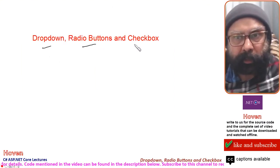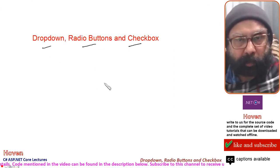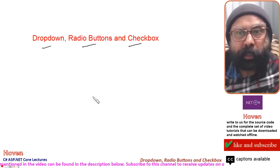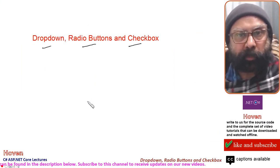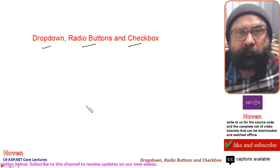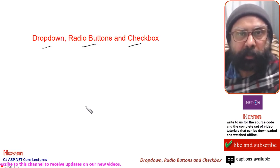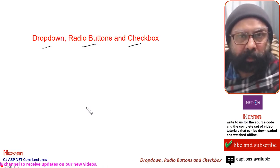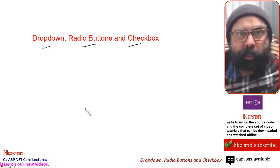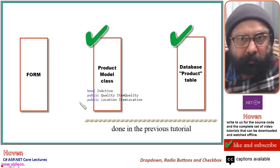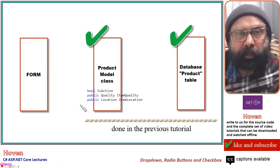We are learning how to extend an existing form by adding drop-down, radio buttons, and checkboxes. Some work has already been done in the last lecture and this is the second part of that lecture. In this tutorial, we will do the remaining work. Let us see what we have already done and what needs to be done.